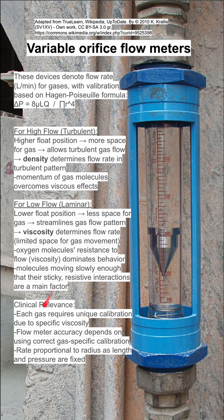For clinical relevance: each gas has a unique calibration due to its specific viscosity, and flow meter accuracy depends on using the correct gas-specific calibration. You will need to change the markings that denote flow rate for each gas. The rate of flow is proportional to radius, as length and pressure are fixed for a certain flow rate.